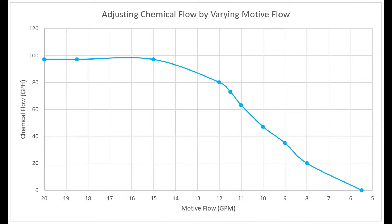Here's a graph showing the motive flow compared to the chemical flow. The motive flow is on the horizontal axis and the chemical flow is on the vertical axis. Our first point, with a motive flow of 20 gallons per minute, equaled 97 gallons per hour. As we reduced the motive flow, the chemical flow rate did not change at first, but then we hit a point where the chemical flow started reacting sharply — and this is what makes it difficult to adjust chemical flow with the motive flow rate.